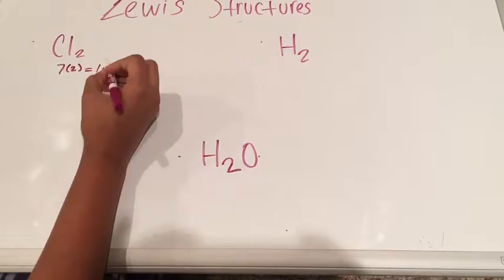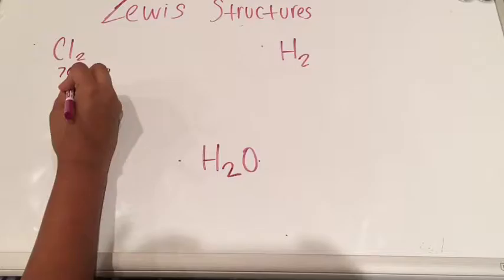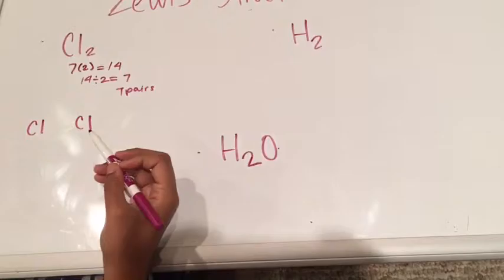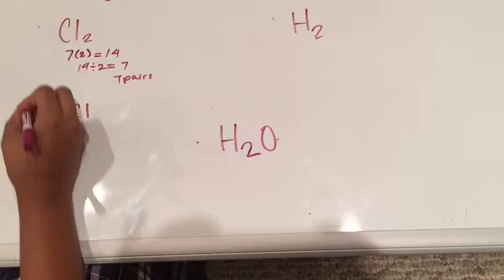In chlorine there are seven valence electrons, so you write seven and multiply that by two because there are going to be two chlorine atoms in this Lewis structure, so that's 14. Then you find out how many pairs of electrons there are going to be, so you do 14 divided by 2, which equals 7 — meaning there are going to be seven pairs in this Lewis structure.